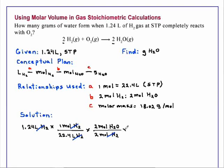We can now convert the moles of water to grams. There are 18.02 grams of water per mole of water. So moles of water cancel.